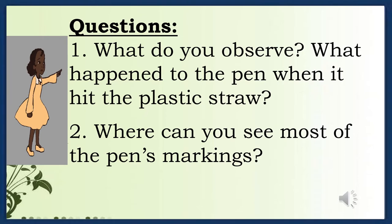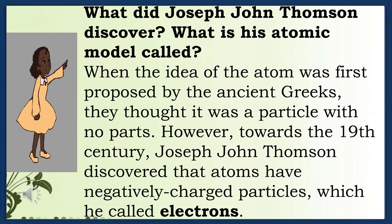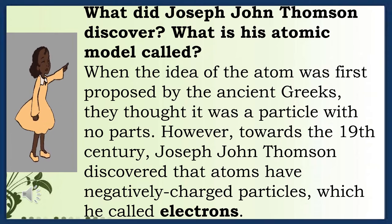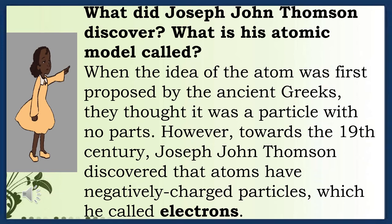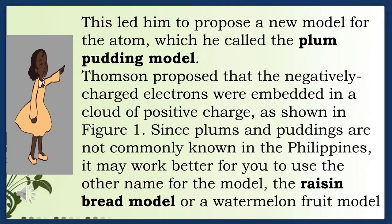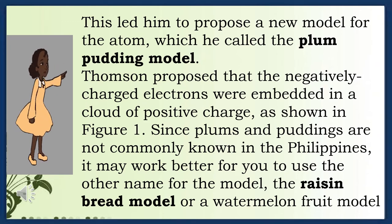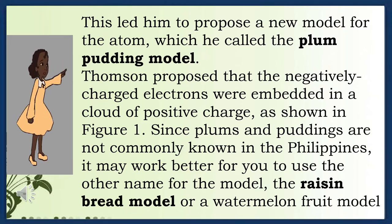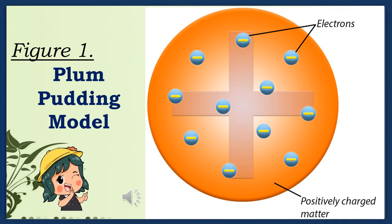What did Joseph John Thomson discover? When the idea of the atom was first proposed by the ancient Greeks, they thought it was a particle with no parts. However, towards the 19th century, Joseph John Thomson discovered that atoms have negatively charged particles, which he called electrons. This led him to propose the plum pudding model. Thomson proposed that the negatively charged electrons were embedded in a cloud of positive charge. Since plums and puddings are not commonly known in the Philippines, it may work better to use the risen bread model or watermelon fruit model.